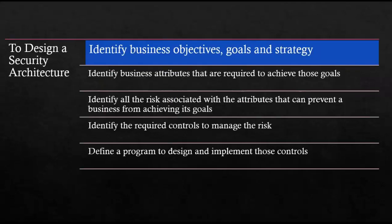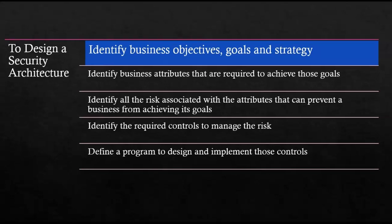To define a security architecture for any organization, we must use a top-down approach — start with the business goals, objectives, and vision, then move downward. The first step is to identify the business objectives, goals, and strategy. Then we need to identify the business attributes required to achieve those goals. Once the business attributes are identified, we need to identify all the risks associated with those business attributes that can prevent the business from achieving its goals.